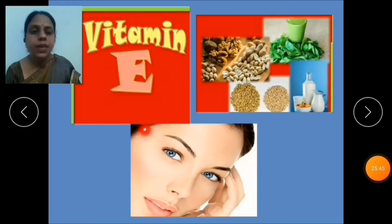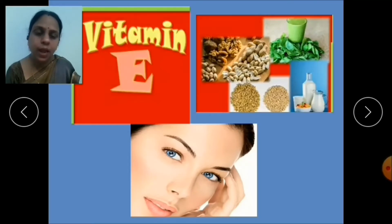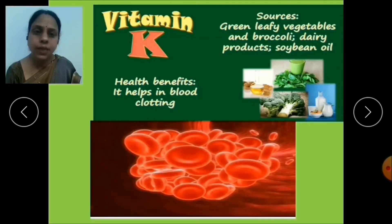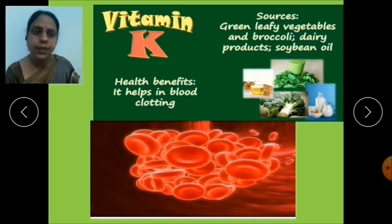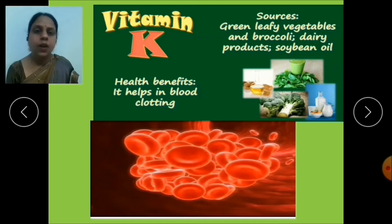Vitamin E keeps the skin healthy and is found in green leafy vegetables, nuts, milk and its products. The last fat-soluble vitamin is vitamin K. It helps in clotting the blood and is found in all green leafy vegetables, dairy products, and soybean oil.